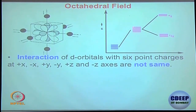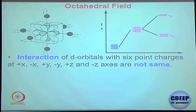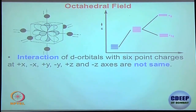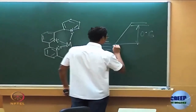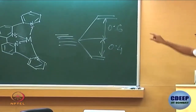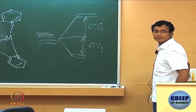The extent of destabilization equals the extent of stabilization relative to the barycenter. It looks asymmetric because there are 3 orbitals in T2g and 2 in Eg. So 6 electrons can go into T2g versus 4 into Eg — giving a factor: the distance from the barycenter is 0.6 for Eg (destabilized) and 0.4 for T2g (stabilized). So Eg is +0.6 delta₀ and T2g is −0.4 delta₀.